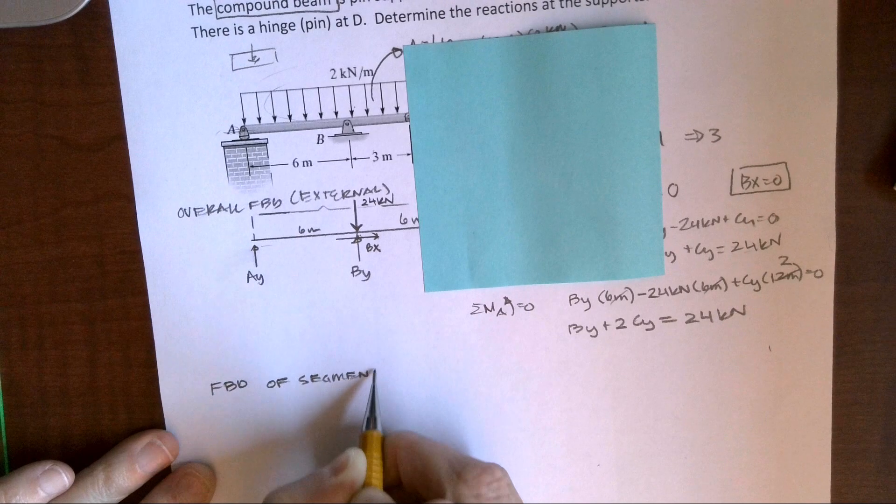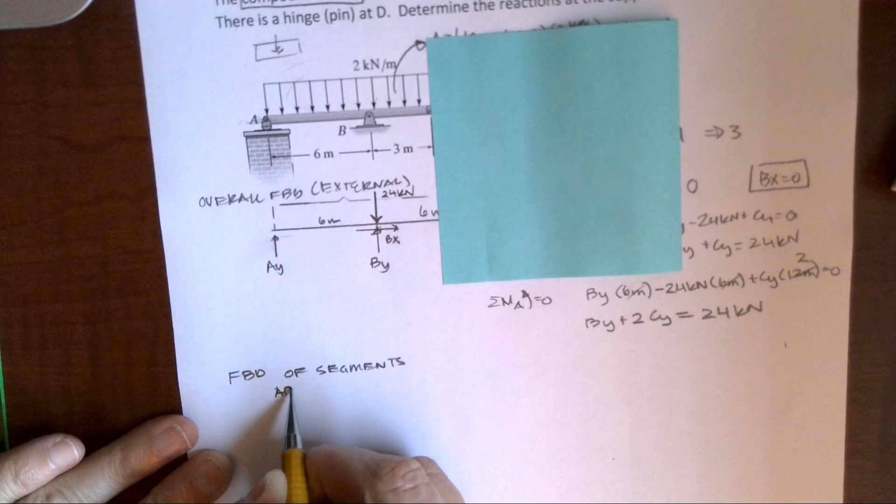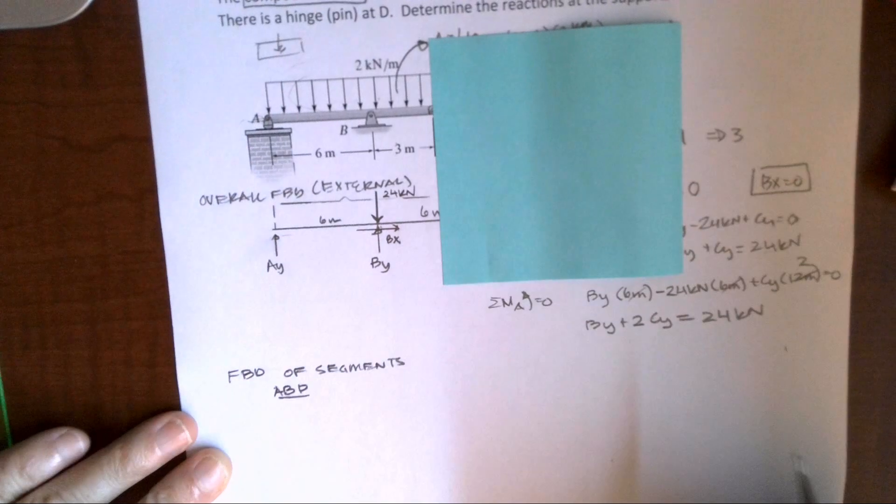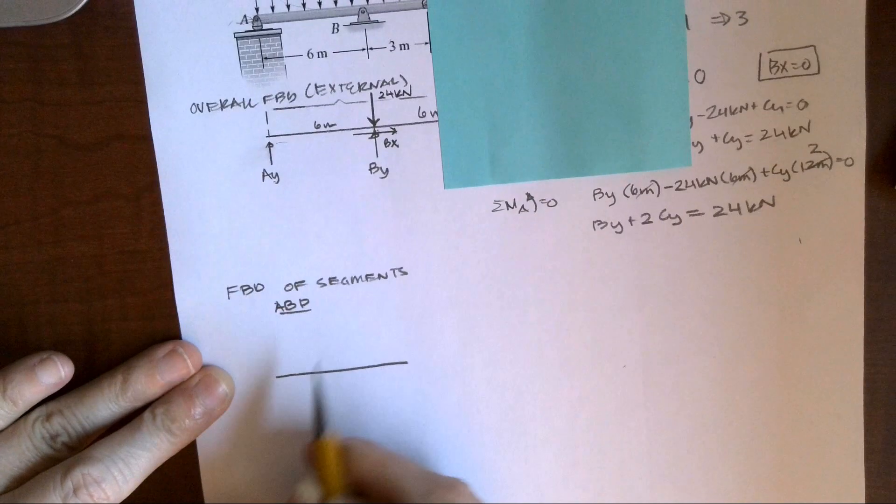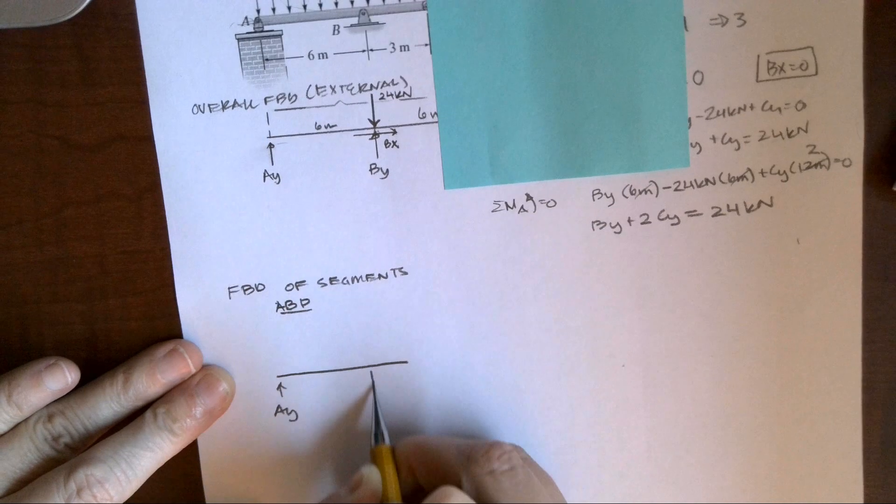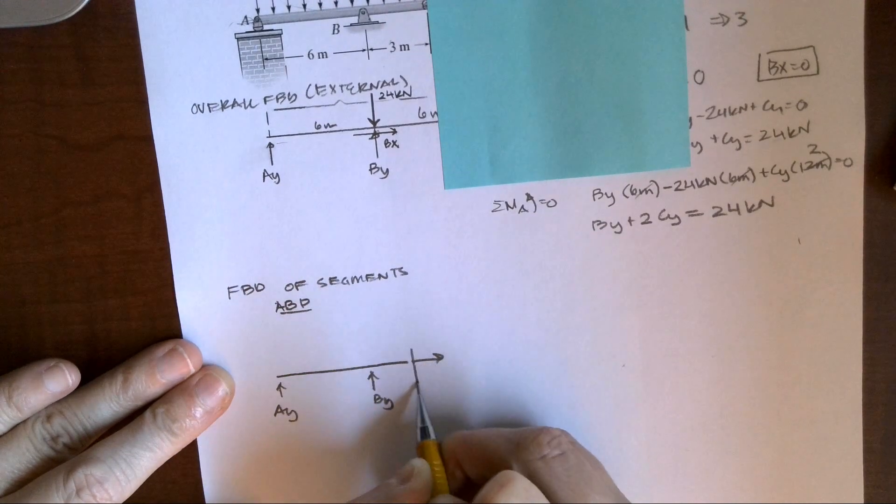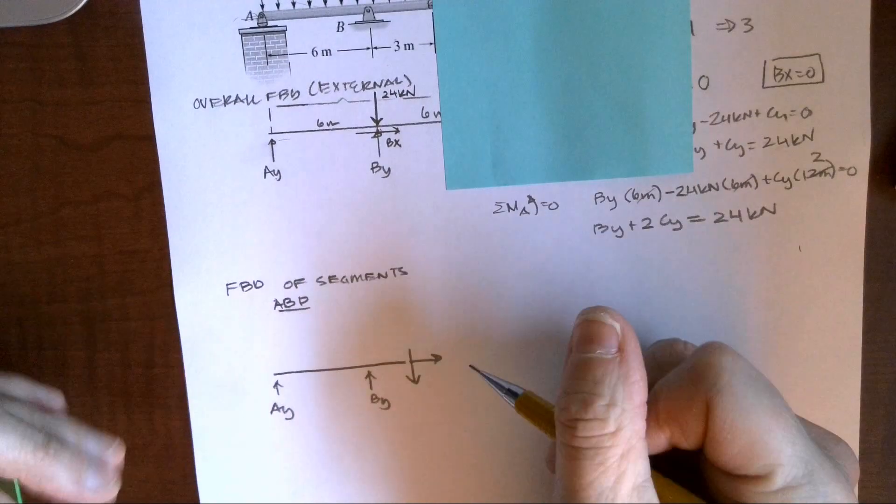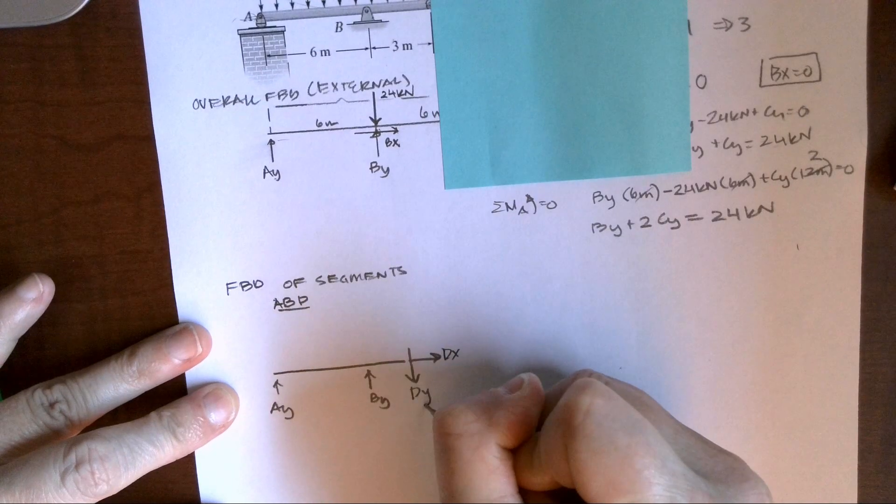And here I'm going to have A, B, D. So again, I draw. I still have that unknown AY. I have that unknown BY. And where I can transfer through that pin, I can transfer both X and Y forces. Not a moment.